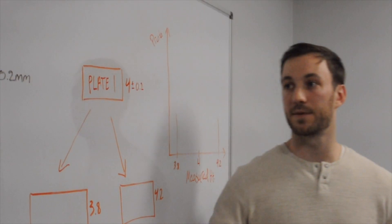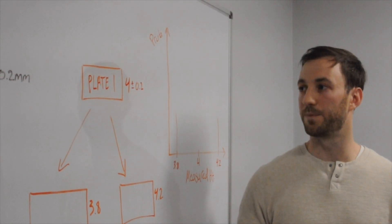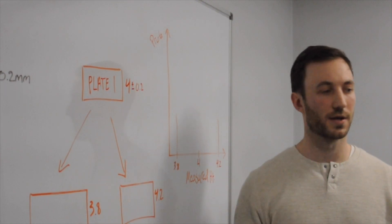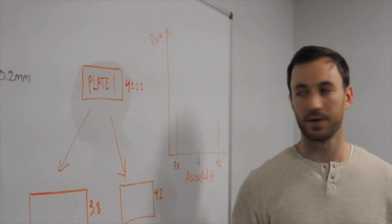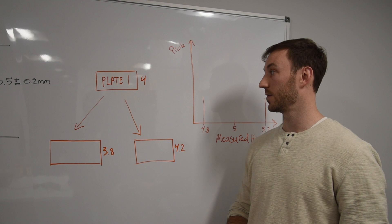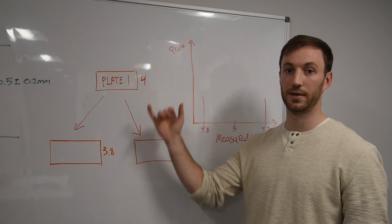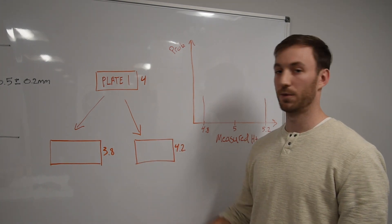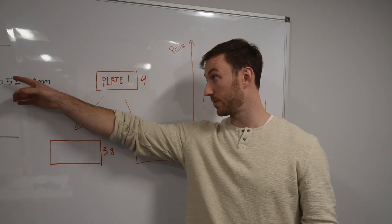So if we take plate one, for example, let's say we order a hundred of these, and they come in from the fabrication shop, it'd be unrealistic to assume that every one of those hundred plates will come in at four millimeters exactly. Therefore, we need to apply a tolerance to all the plates.